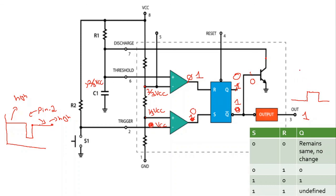This is how the 555 timer works in monostable operation. The time interval for which the output remains high — the unstable state — is given by T_high = 1.1 × R1 × C1. The values of R1 and C1 determine how long the output of the 555 timer remains in the high unstable state.